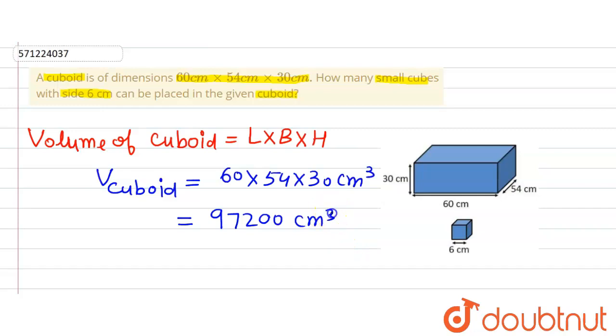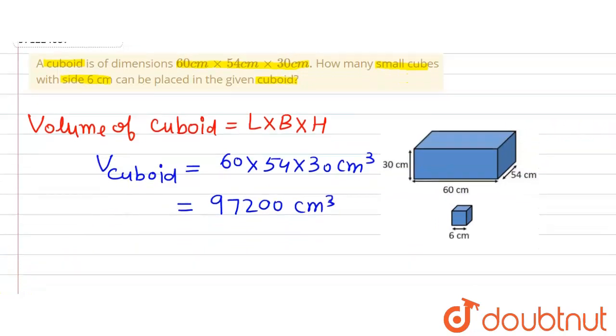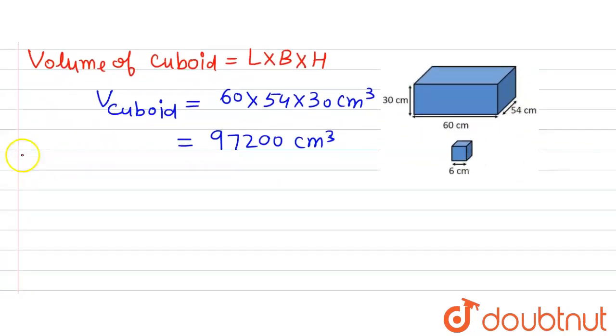Now we will find out the volume of cube. So let's do it. Now the formula for volume of cube is: volume of cube is equal to the side of the cube raised to the power 3. So in this case, the side of the cube is given as...